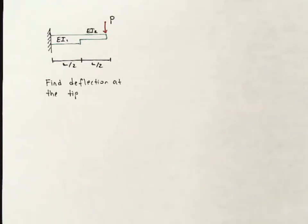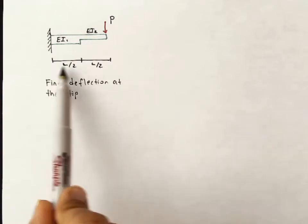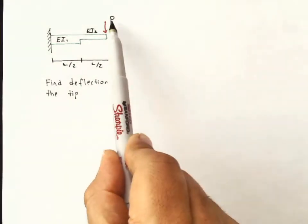In this example, we'll be looking at a cantilever beam with a point load at the end. We're interested in finding the deflection of the tip. This cantilever beam is a total length L. The magnitude of the load is P.